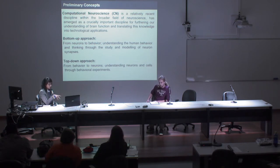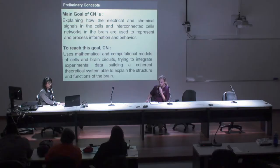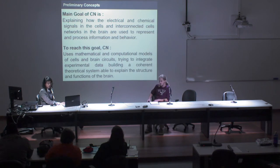The other approach is the opposite: the top-down approach goes from behavior to neurons, trying to understand neurons and cells through behavioral experiments. The main goal of computational neuroscience is explaining how the electrical and chemical signals of the brain are used to represent and process information and behavior.